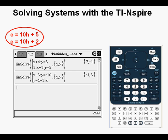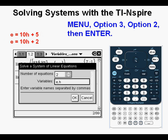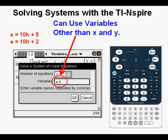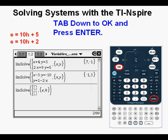Now we're going to enter this system of equations: E equals 10h plus 5 and E equals 10h plus 2. We get to this view by going to the menu, picking Option 3, Algebra, then Option 2, Solve System of Linear Equations, then Enter. We change the variables from X and Y to E and H. Part of what we're doing here is to show that we can use variables other than X and Y. Tab down to OK and press Enter.